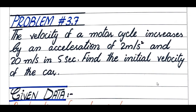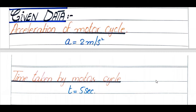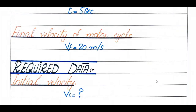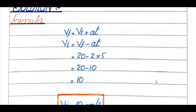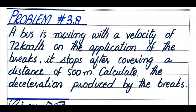Problem number 3.7: Velocity of a motorcycle increases with an acceleration of 2 m/s² to reach 20 m/s in 5 seconds. Find the initial velocity. Acceleration is 2 m/s², time is 5 seconds, final velocity is 20 m/s. Using vf = vi + a·t, rearranging: vi = vf − a·t = 20 − (2 × 5) = 20 − 10 = 10 m/s.